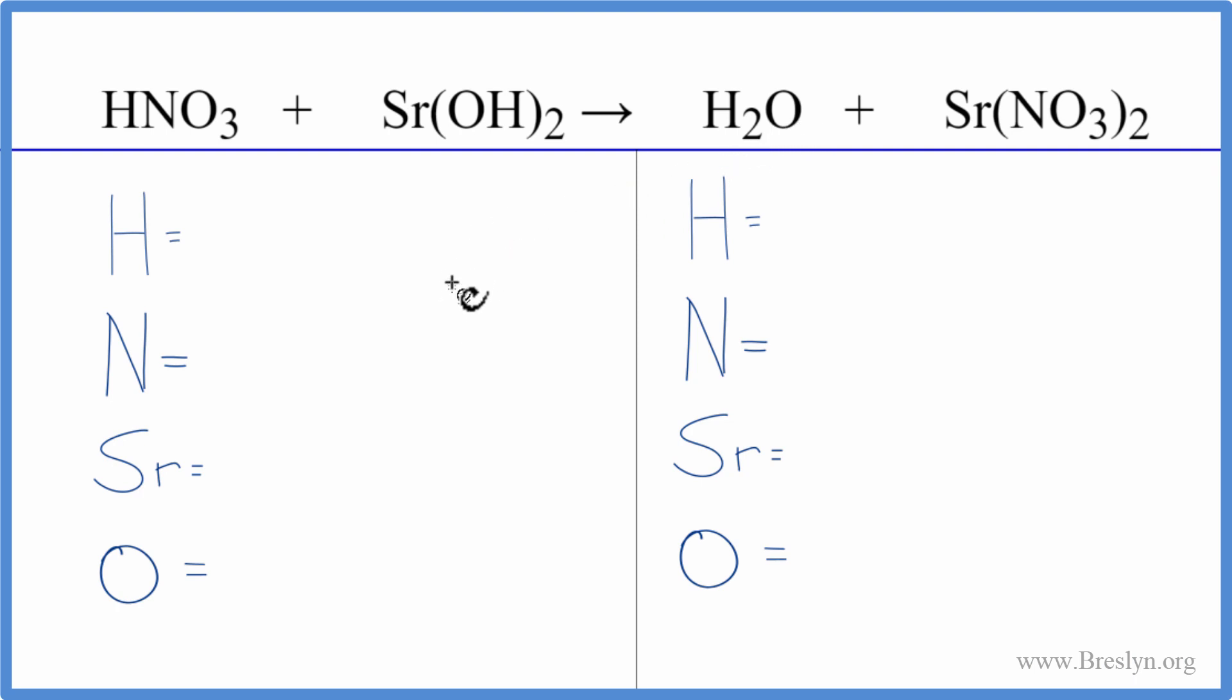To balance it, let's count the atoms up on each side. We have one hydrogen plus, and be careful, this two, it applies to everything in parentheses. So we have one times two. We have two more hydrogens. That gives us a total of three.